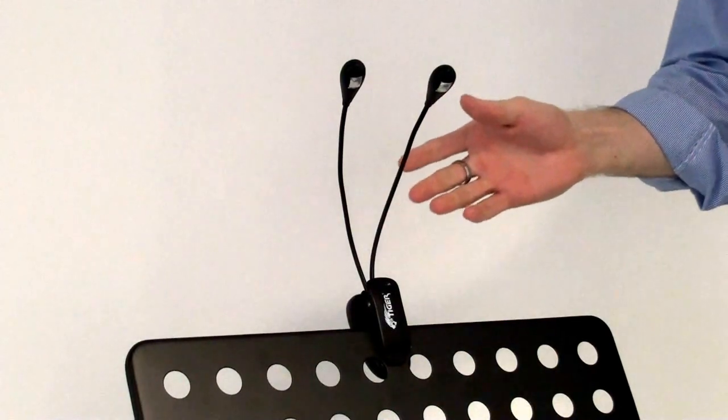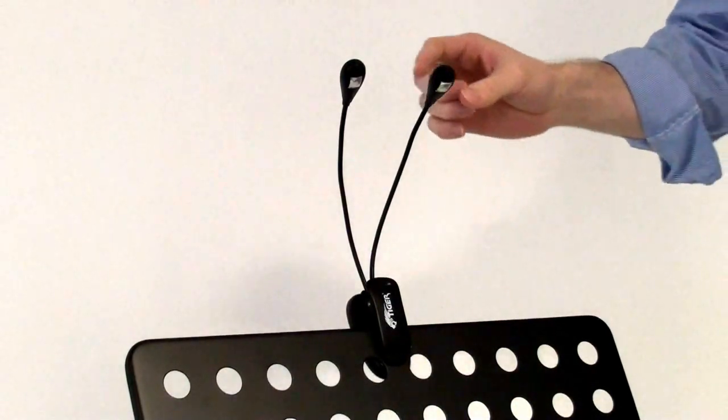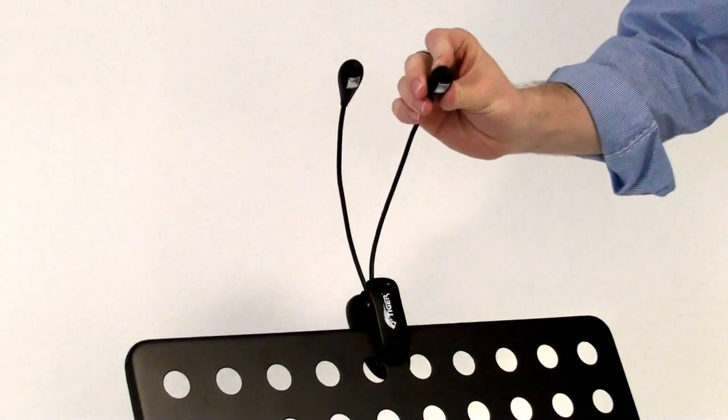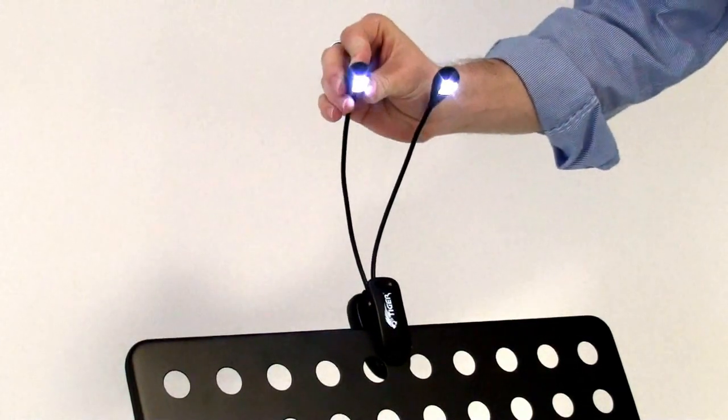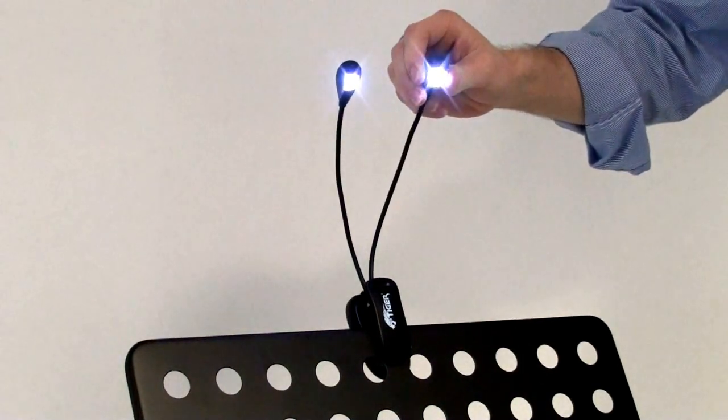Okay, here we have the Tiger Music Stand light with dual heads. It has a single LED in each of the heads, which lights up your pages of sheet music very well.